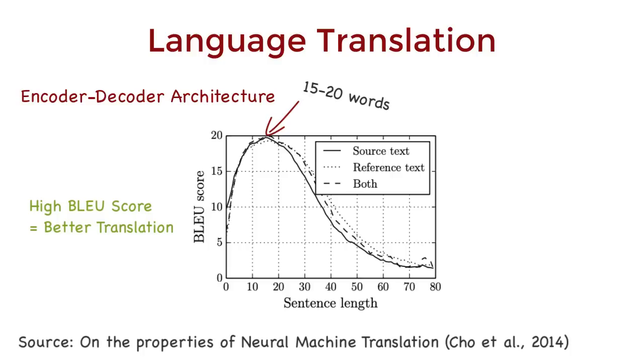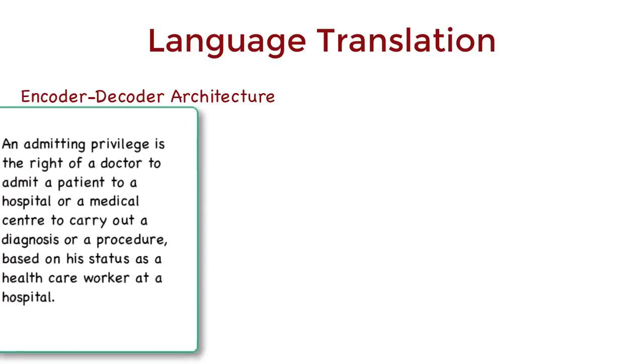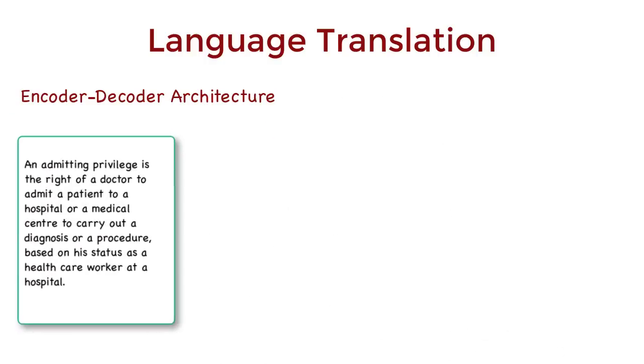Let's see how this does with longer sentence translation with an example. Say we have an English sentence that we want to translate to French. An admitting privilege is the right of a doctor to admit a patient to a hospital or a medical center to carry out a diagnosis or procedure based on his status as a healthcare worker at a hospital.